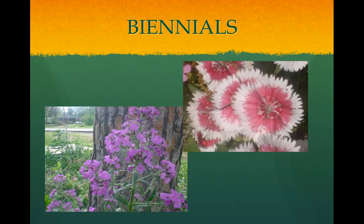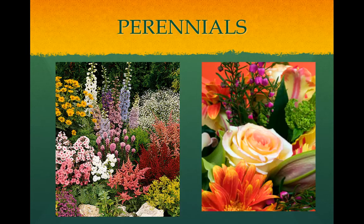Biennials complete their life cycle in two years. They grow small in the first year and they flower in the second year. Perennials live and reproduce for many years. These are the types of plants, like tulips, that come back every year. The advantage is they come back every year and you don't have to replant them. The disadvantage is their flowers don't last very long.